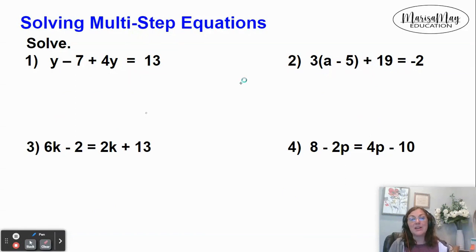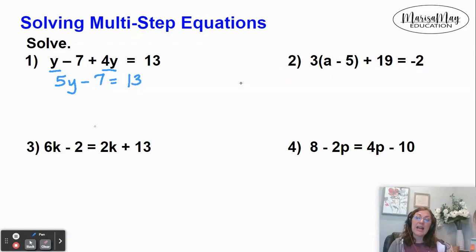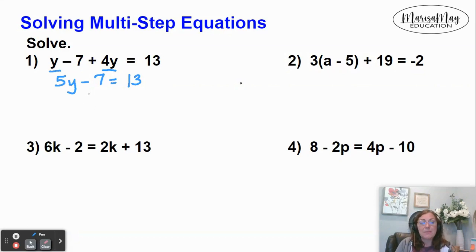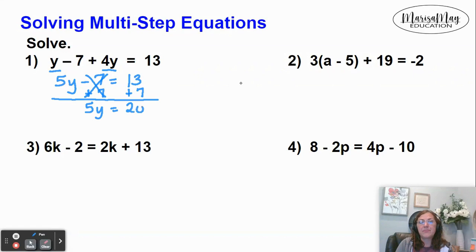In problem number one here, we can combine the y plus the 4y, which will give me 5y, and then don't forget my minus 7 equals 13. Do you see how I didn't do something to both sides of the equation? I just simplified one side. That's what I want to do first if I can. Now I can ask myself what's happening to the variable: it's being multiplied by 5 and being subtracted by 7. So we're going to do the opposite of subtracting 7 — the opposite is to add 7 — and we do that to both sides. The opposites cancel, giving me 5y equals 20. Now we do the opposite of multiplying by 5, which is to divide by 5, and I get y equals 4.